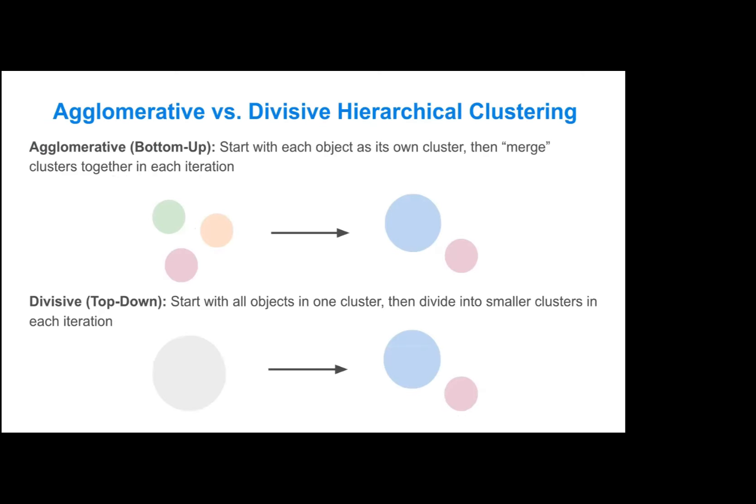There's two subcategories of hierarchical clustering. There is agglomerative or bottom-up clustering, where you start with each object as its own cluster and then merge those clusters together in each iteration until you get your final set of clusters. There's also divisive or top-down clustering, where you start with all objects in one cluster and continuously divide them into smaller clusters in each iteration. All the methods I'm going to be talking about are pretty much agglomerative clustering methods. Divisive clustering is very infrequently used, not as intuitive to understand, and there's not a lot of predefined functions for it in many coding languages. Agglomerative clustering is probably most often what you will encounter.